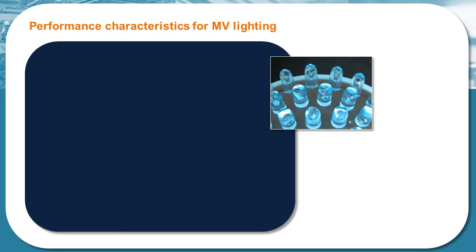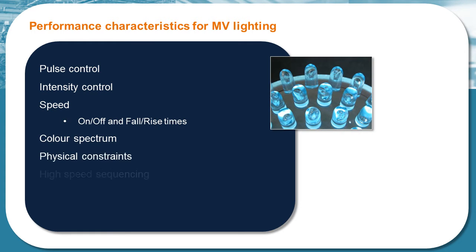The resulting selection criteria and performance factors for lighting are then typically pulse control, intensity control, speed (that's both on-off and fall and rise times), color spectrum, physical constraints, high speed sequencing and the overall cost of ownership.